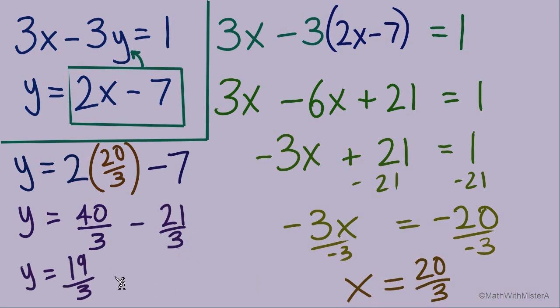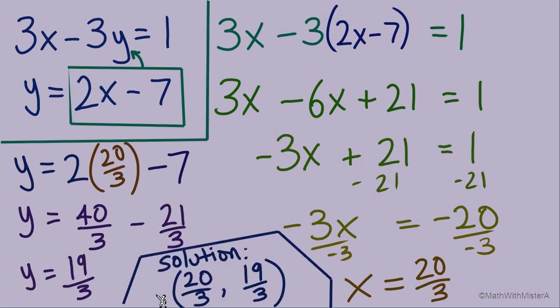So again a couple of fractions, but they do check out. And there's our ordered pair solution. Keep in mind that we've got the x value first, the y value second, and our solution 20 thirds and 19 thirds.